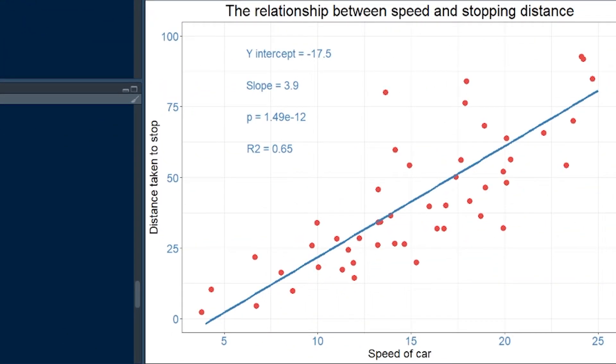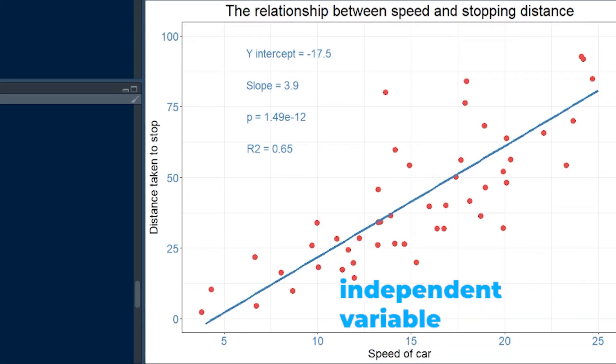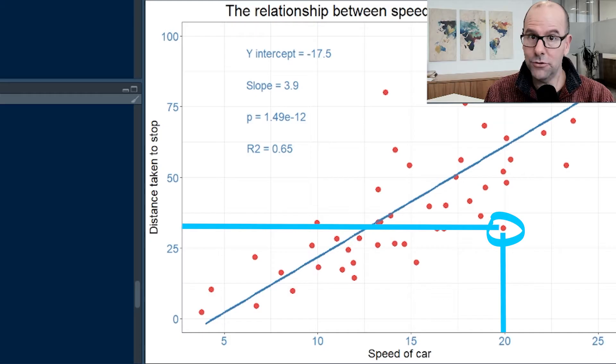We can plot this data on a Cartesian plane. The x-axis is the independent variable - speed doesn't depend on stopping time. The dependent variable, distance taken to stop, is on the y-axis because the value of y depends on the value of x. We can plot all of our observations on this plane, where each observation has an x and y value.